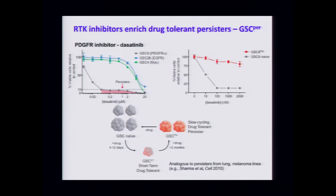Within this genetically amplified PDGFR-dependent population, cells can acquire a different state that is independent of the RTK. We take naive cells, culture them in the presence of dasatinib, and over time acquire this slow-cycling population. This is analogous to persisters defined in lung, melanoma, breast, and other settings. It seems to be reversible: we can remove drug pressure and these cells go back to their initial state where they're proliferating rapidly and PDGFR-dependent — it's a reversible persister state.